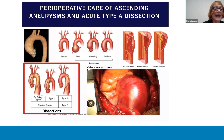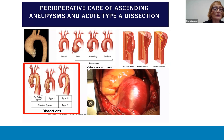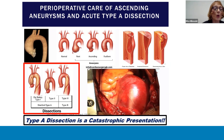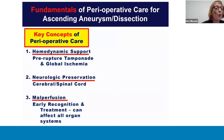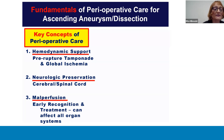A type A dissection is a catastrophic presentation, as you can see here in this video, and requires immediate diagnosis and treatment. When considering the fundamentals of perioperative care of ascending aneurysms and dissections, it's important to consider three key critical concepts. Number one: hemodynamic support for patients with pre-rupture and cardiac tamponade leading to hemodynamic collapse, as well as cardiac dysfunction leading to global ischemia.